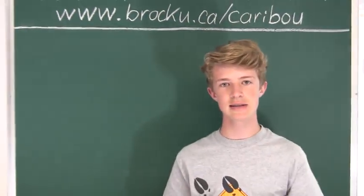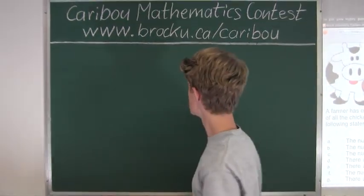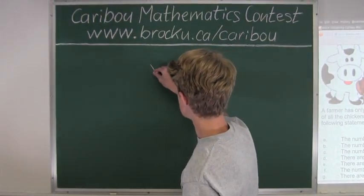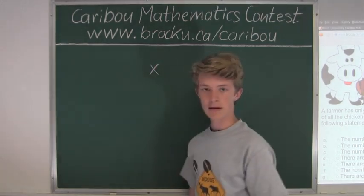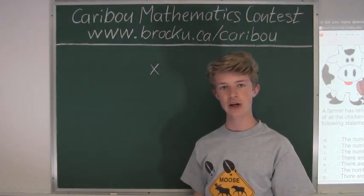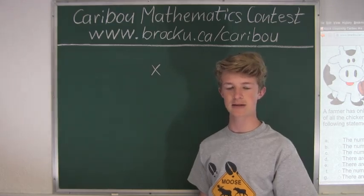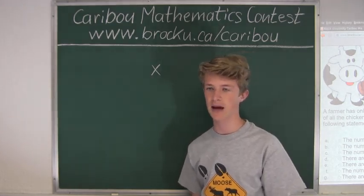So let's say the number of cows is x. And we know that the number of chickens must be four x because there are four times as many chickens as cows.